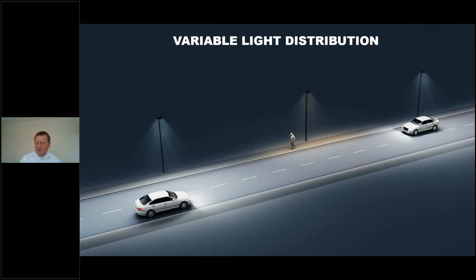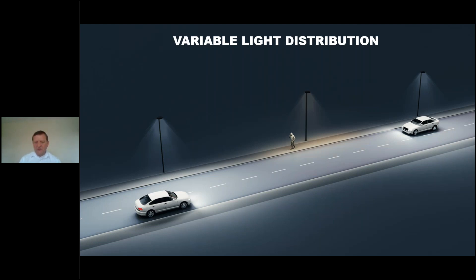Not just lighting colour — what about light distribution? Different activities need different quantities and qualities of light, so why do we just light them the same? If we have a pathway or a cycleway next to a road, and we detect a car we turn everything on, and if we detect a bicycle we also turn everything on. Why can't we have separate distributions that just light what's needed for the people who are there? LED technology, because it's digital and essentially a point source, lets us do all sorts of things we could only dream of with old HID technologies. We can give people the light they need without wasting light they don't need.